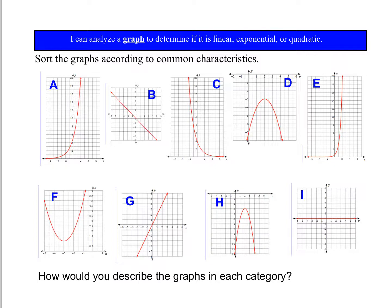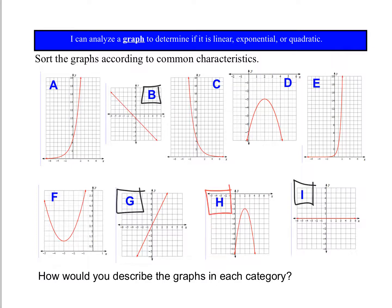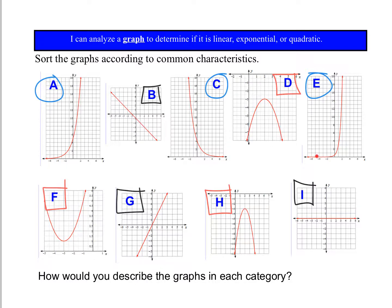Let's go back to our graph and see how you did sorting them. B, G, and I are all linear. B is negative linear because it's going down, G is positive linear, and I is a horizontal line but still linear. H, D, and F are all quadratic — F is positive quadratic because it opens up, H and D are negative. Our exponentials are E, C, and A. A is exponential growth because it's getting bigger, C is decay, and E is growth.